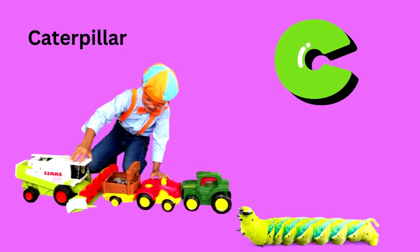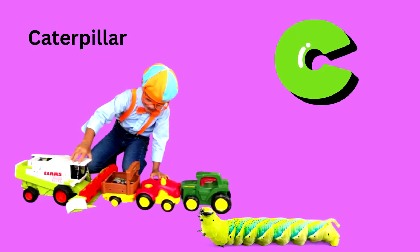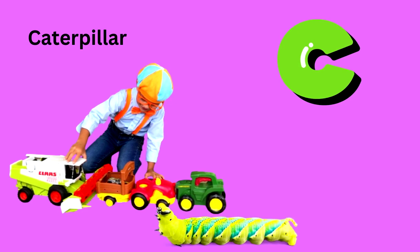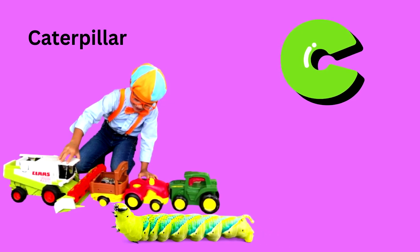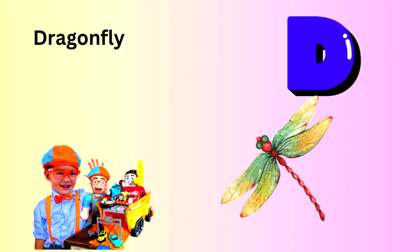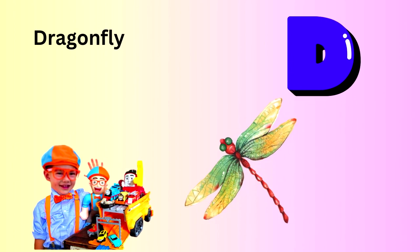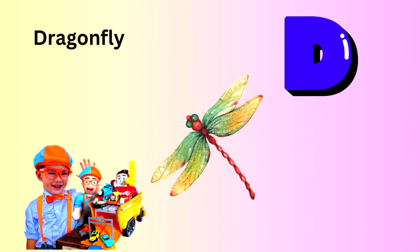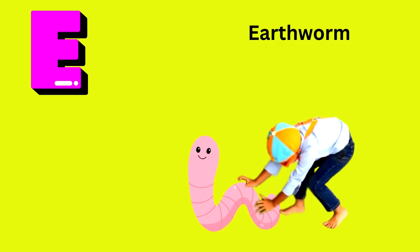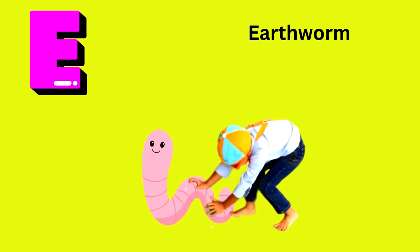C is for Caterpillar. D is for Dragonfly. E is for Earthworm.